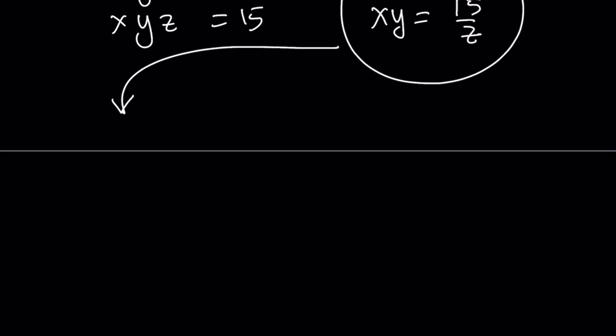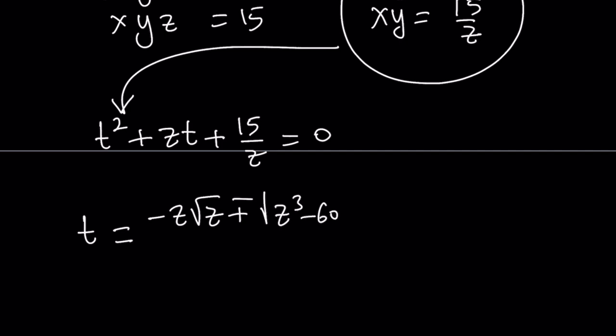By using the same variable t, this gives us t squared plus zt plus 15 over z equals 0. Now t is the variable here; we're going to treat z as a parameter or a constant. So the solution is going to be in terms of z. If you use the quadratic formula, and I'll simplify the process for you, to keep a long story short, t can be written as negative z root z plus or minus the square root of z cubed minus 60, all over 2 times the square root of z. And this gives us two solutions.